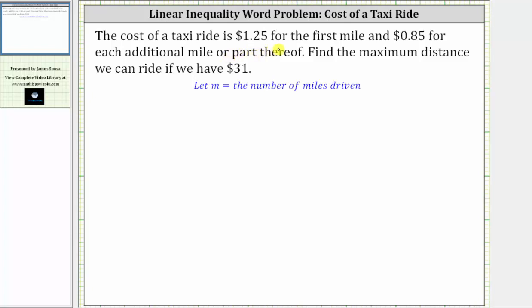The cost of a taxi ride is $1.25 for the first mile and 85 cents for each additional mile or part thereof. Find the maximum distance we can ride if we have $31.